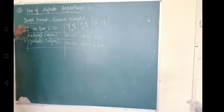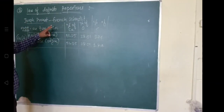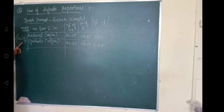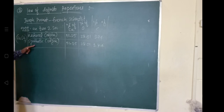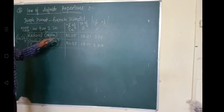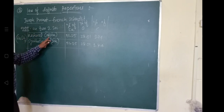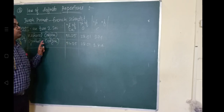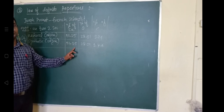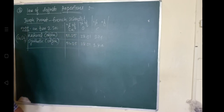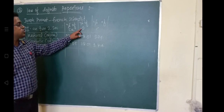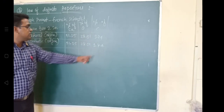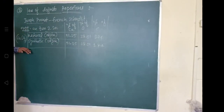Once again, look at this. What Joseph Proust did — he performed the experiment on samples of cupric carbonate (CuCO3), one natural and observed that the percentage of copper in the natural cupric carbonate was 51.35%. You will observe through this table that the percentage of copper, the percentage of oxygen, and the percentage of carbon in these two samples were found the same.